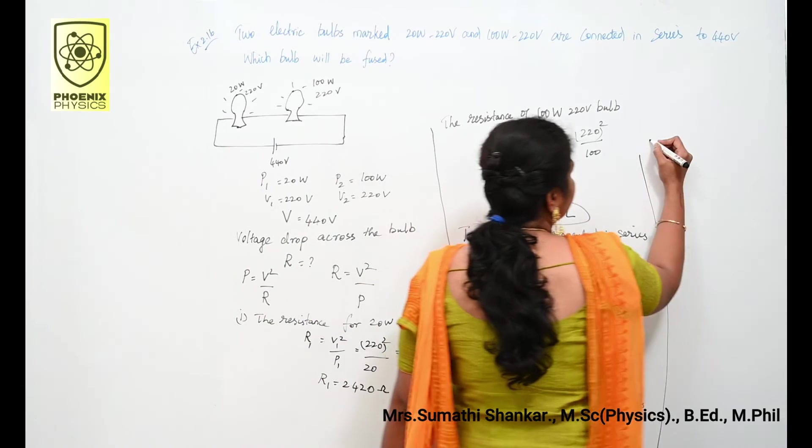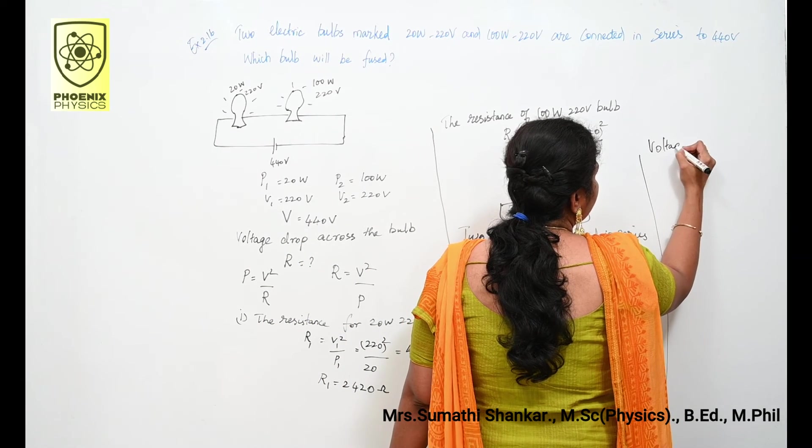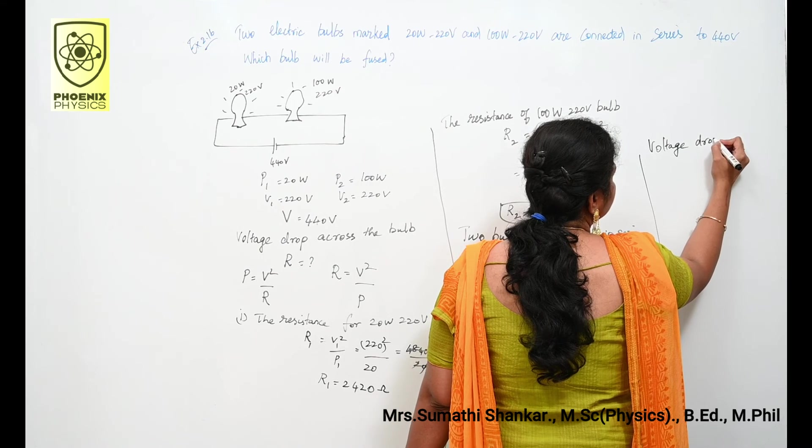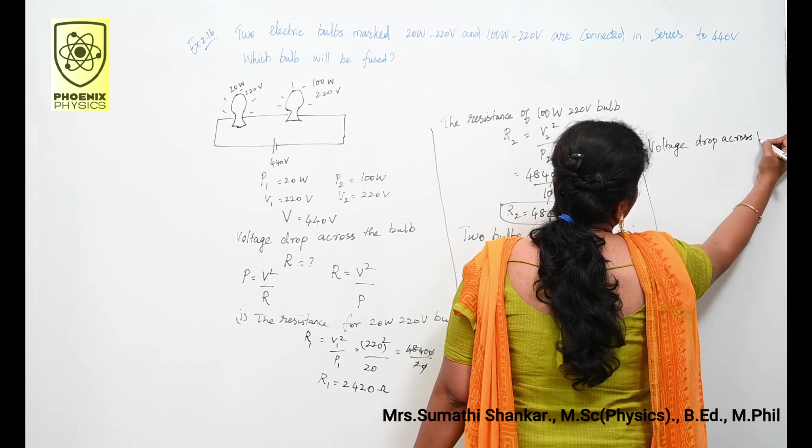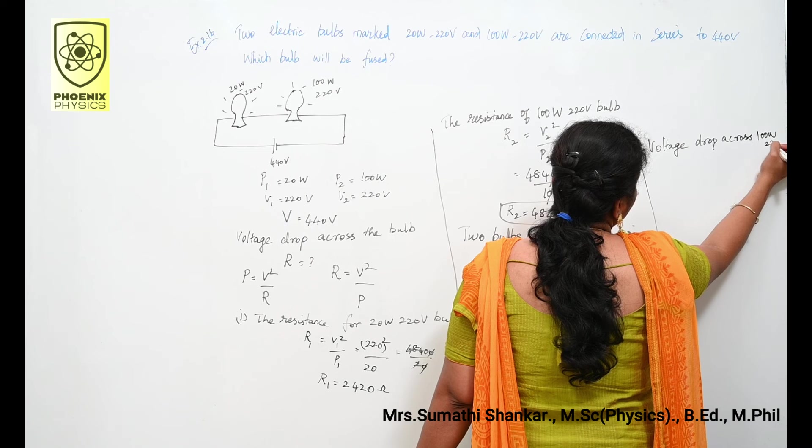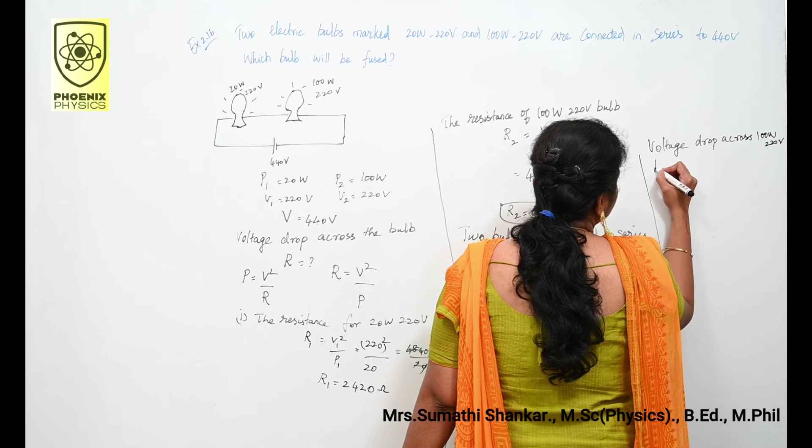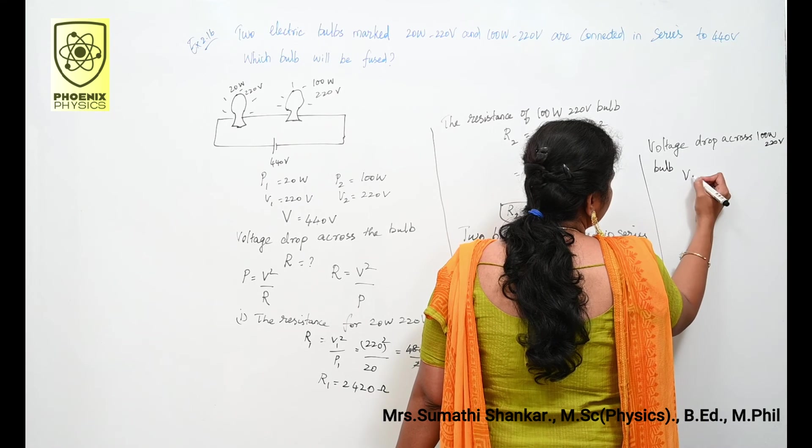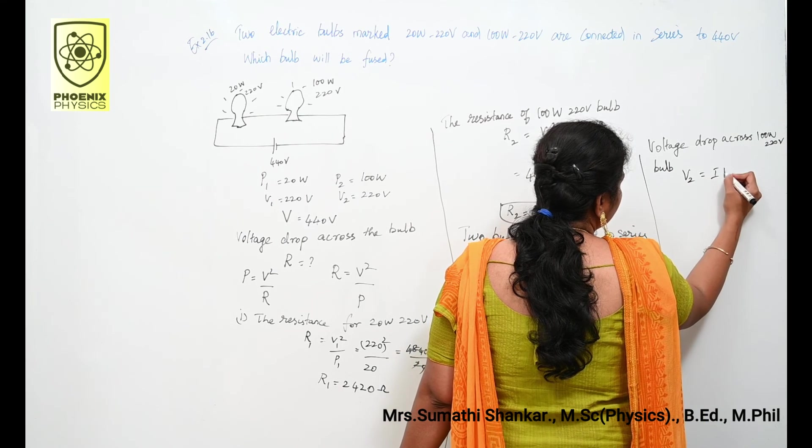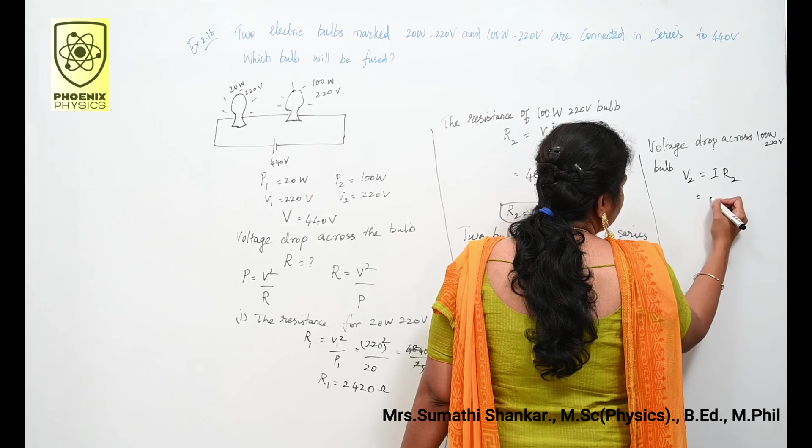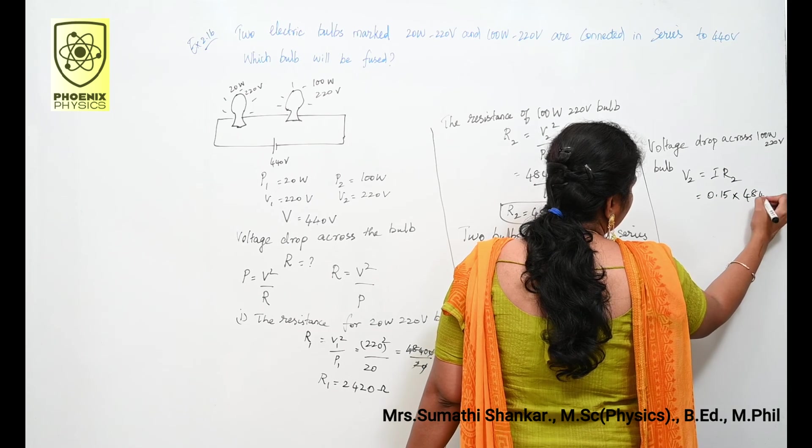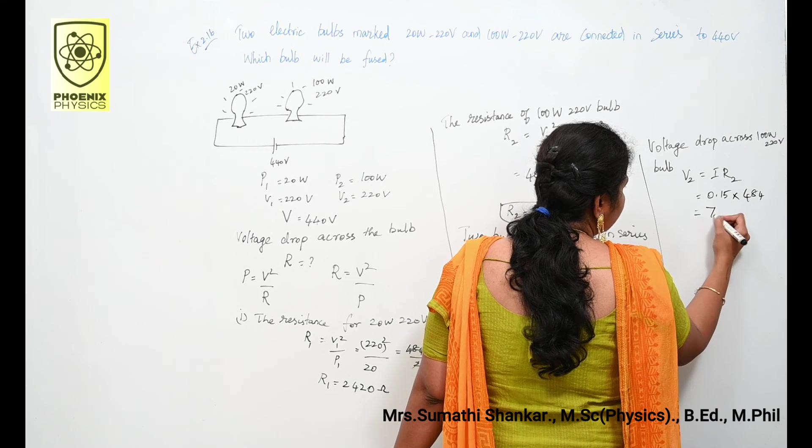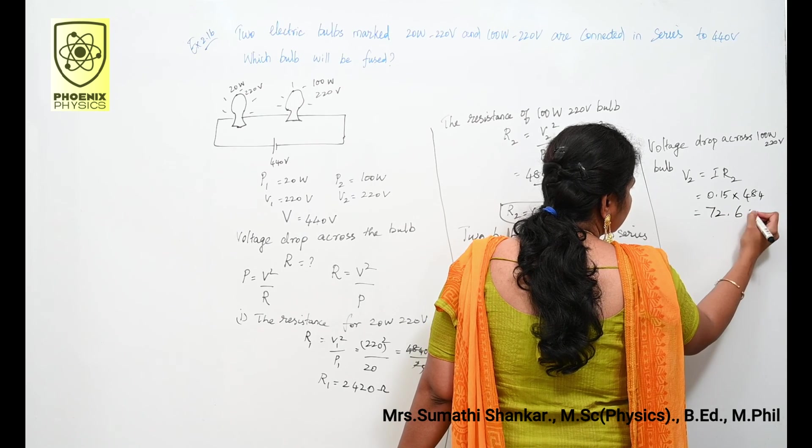Next I am going to calculate voltage drop across 100 watt 220 volt bulb. You take it as V2. V2 is equal to I into R2. I is 0.15, R2 is 484. Multiply these two, you can get 72.6 volt.